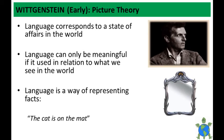Wittgenstein argued that the logical structure of language provides the limits of meaning; the limits of language for Wittgenstein were the limits of philosophy. What we can say at all can be said clearly, he argues. Anything beyond that — religion, ethics, aesthetics, the mystical — cannot be discussed. They are not in themselves nonsensical, but any statement about them must be.